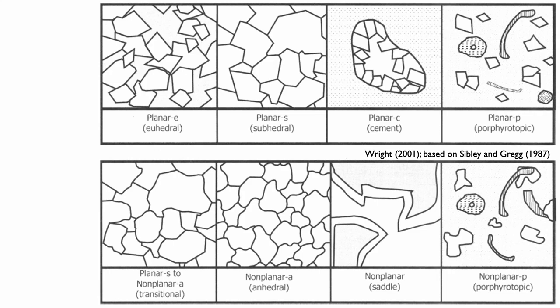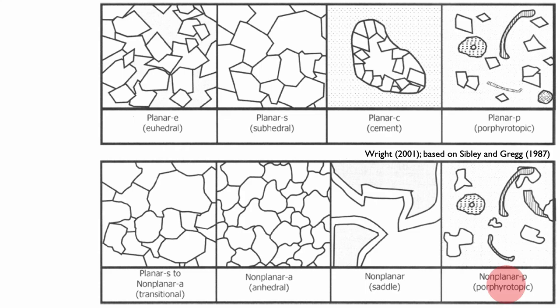There is a special case of non-planar dolomite known as saddle dolomite. Saddle dolomite is relatively large — a few millimeters to centimeters. It is a very interesting dolomite to recognize because it only forms at high temperature, above 60 degrees, so it's always associated with some form of hot fluid, maybe hydrothermal fluid or subsurface conditions. It is not an early dolomite. You can also have a non-planar P dolomite, a porphyric dolomite very similar to the planar P, with the difference that the minerals don't have nice planar surfaces but are sub-rounded.